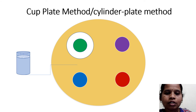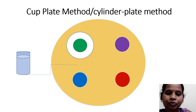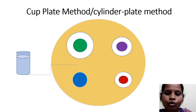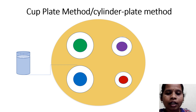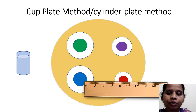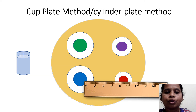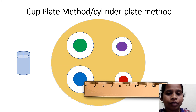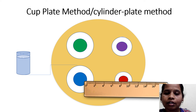After incubation we can observe the zone of inhibition — the area where there is no growth of microorganism — while elsewhere there is growth. The zone of inhibition for different antibiotics will be measured with a scale, and a graph of the diameter of the zone of inhibition versus the log concentration of the antibiotic will be plotted to determine whether it is effective against that particular microorganism.